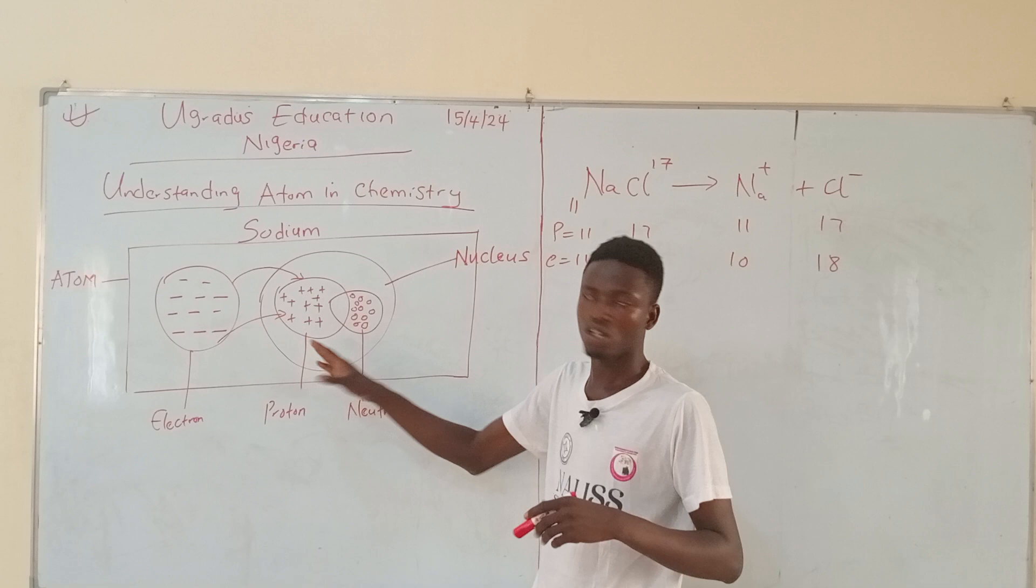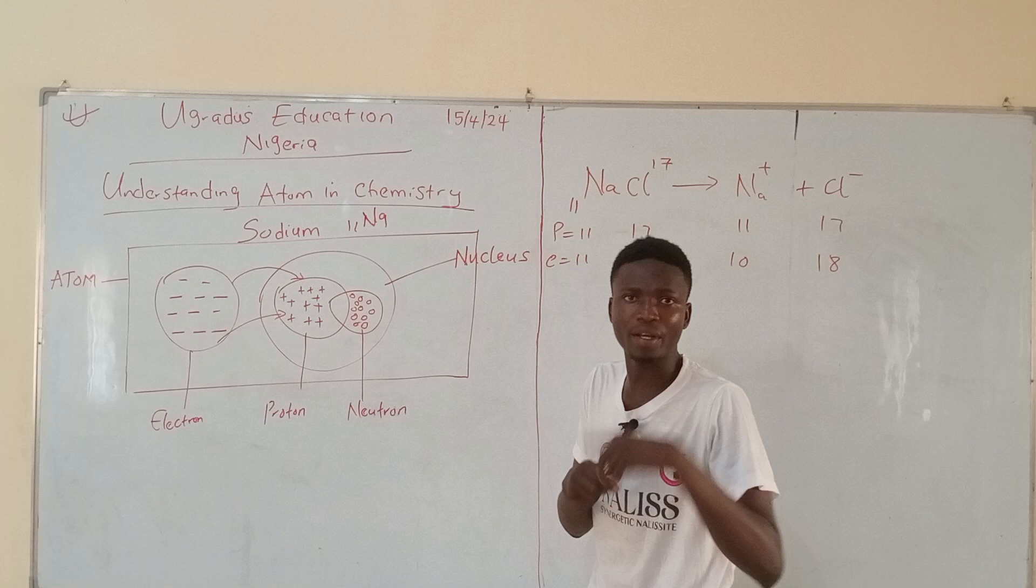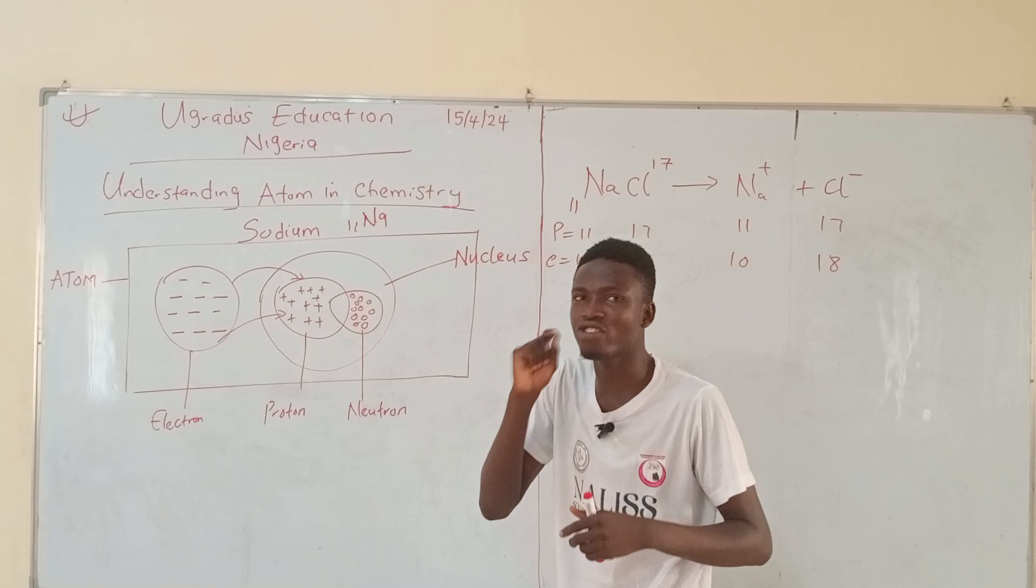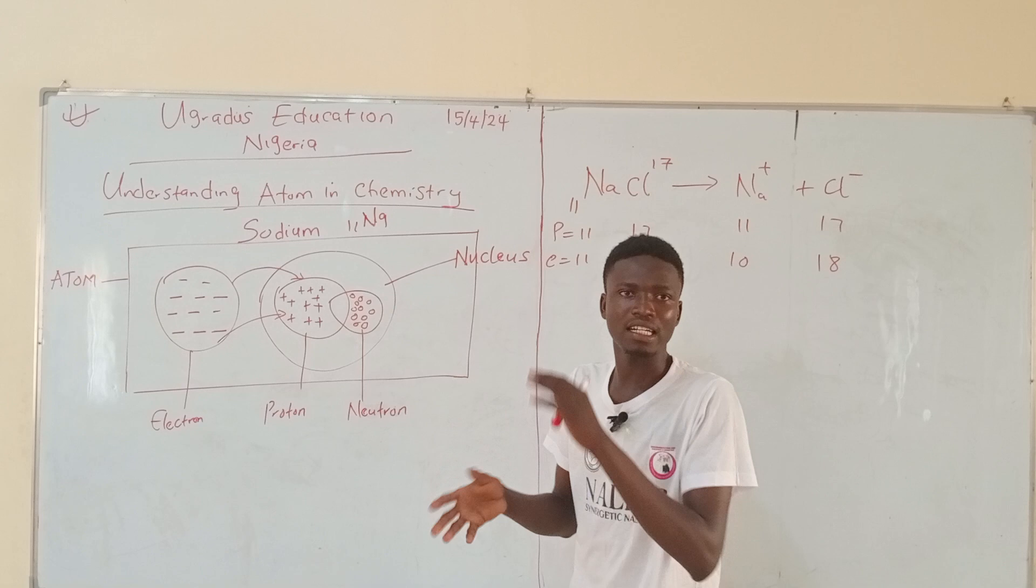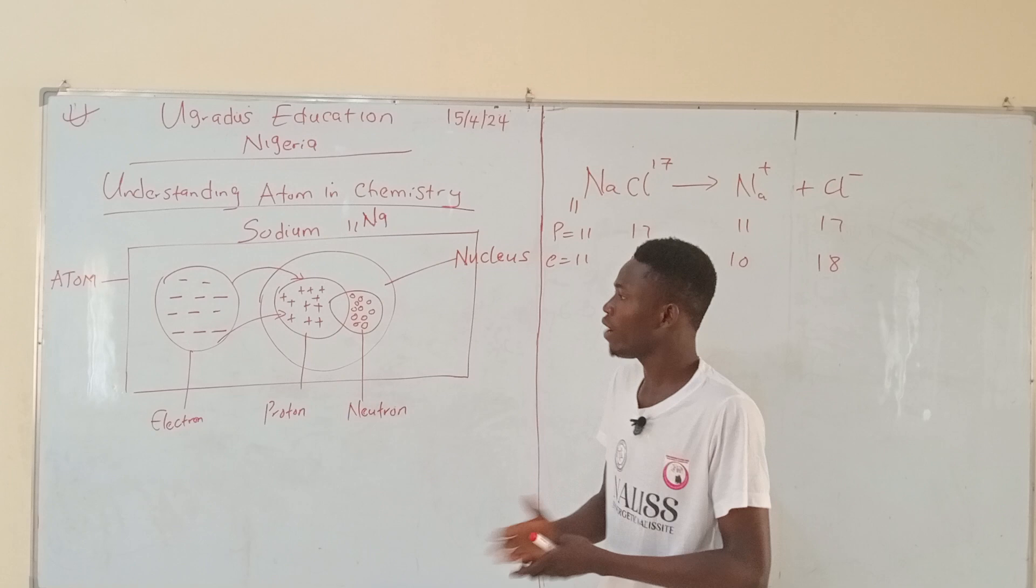Once you know that sodium is 11 in the periodic table, that should depict for you that sodium will also contain 11 protons and 11 electrons at neutral state. What happens when sodium begins to lose electrons will be discussed later. But at neutral state, sodium contains 11 protons and 11 electrons, while the number of neutrons can be any number depending on the isotope of the element.